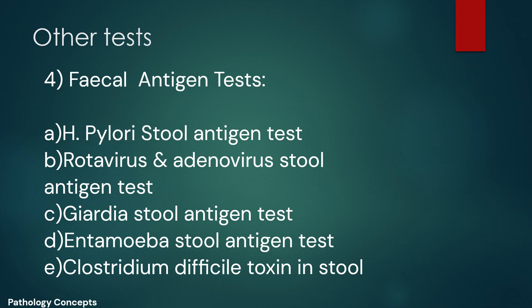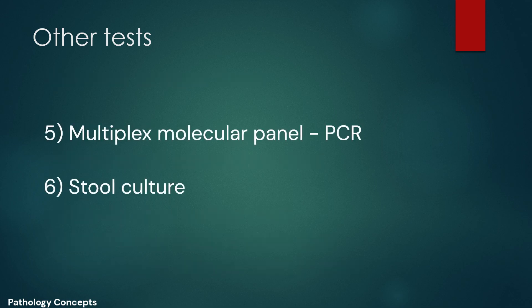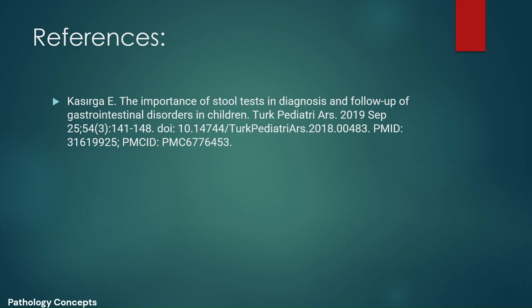The next test is the multiplex molecular panel method using PCR, which enables detection of numerous pathogens — more than 20 bacteria, viruses, and parasites — in a short period of time. The last test is stool culture. This is a short overview of stool examination, along with the references for this video.